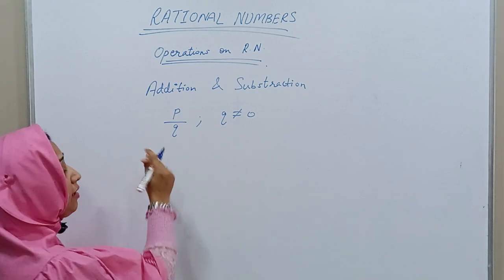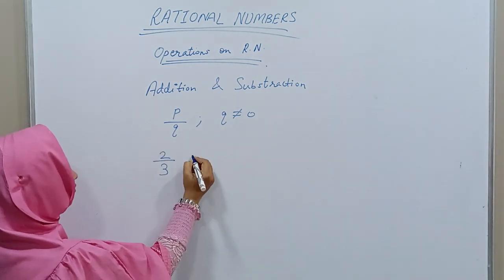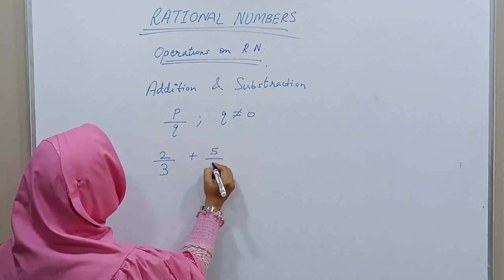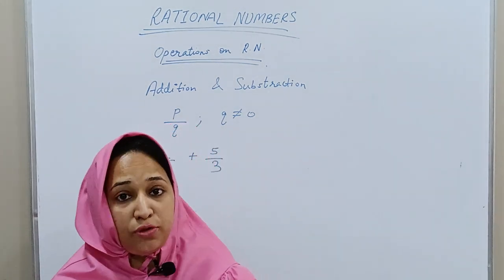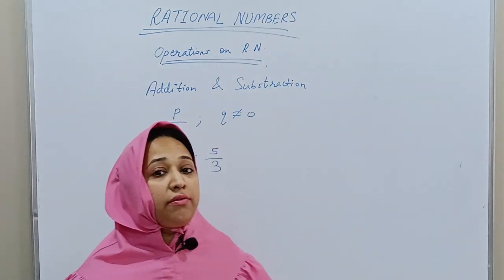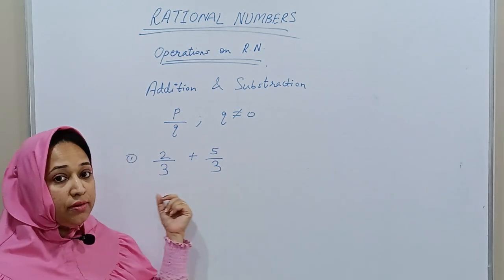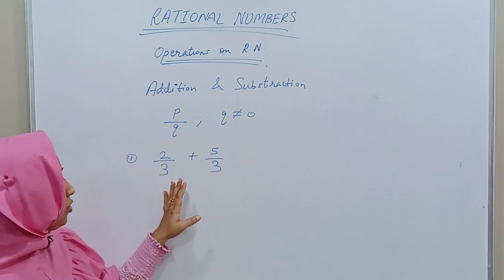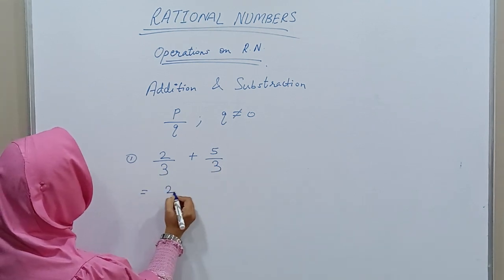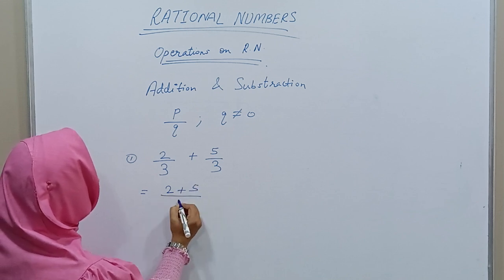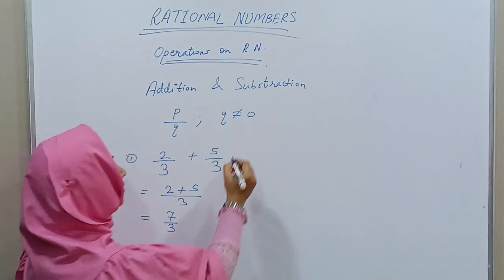Addition and subtraction of rational numbers go hand in hand. For example, if we have 2/3 + 5/3, the first condition is to check whether the denominators are equal. Since both denominators are 3, we simply add the numerators: 2 + 5 = 7, giving us 7/3 as the answer.